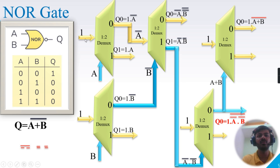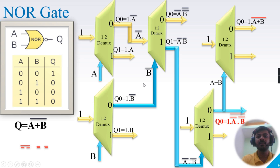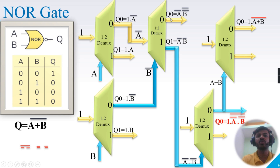For the third demux, Q0 from the first demux (B-bar) is connected as the select line, and A-bar is the input. Based on select line B-bar, A-bar is routed to Q0 and Q1. So Q0 equals A-bar AND B-bar AND 1, and Q1 equals A-bar AND B-bar.